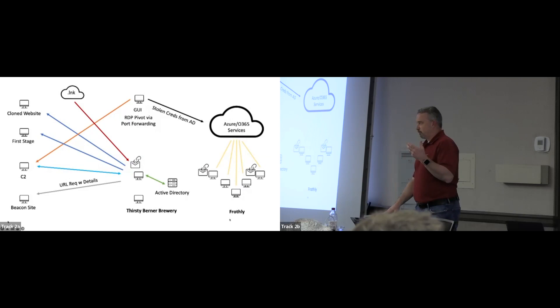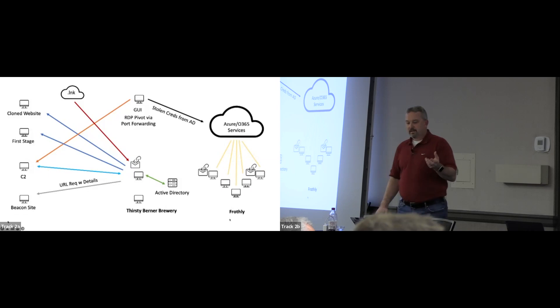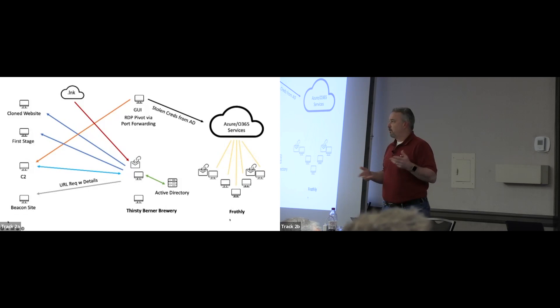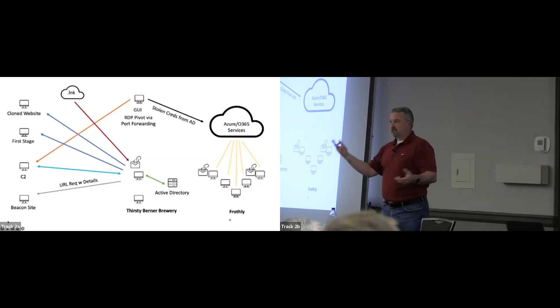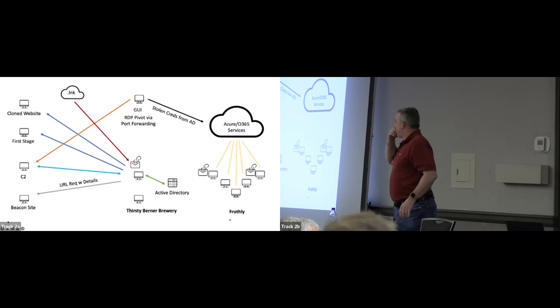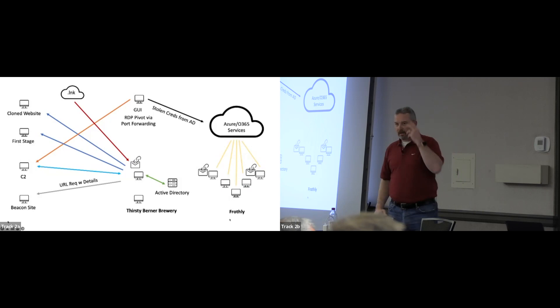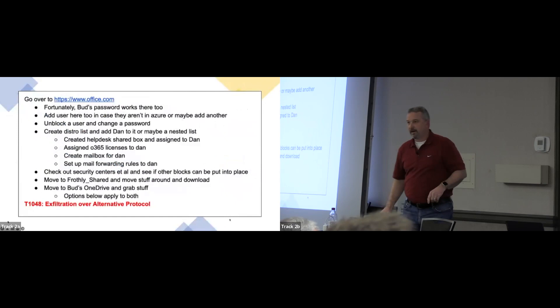The brewing supply company bought the brewery. The brewery was running a local AD syncing to Azure, where the rest of Frothly had moved, because nobody's infrastructure is fully migrated on day one when you buy a new company — there's always a six or nine month transition. With APTs there's a lot of stuff happening and a lot of misdirection, so drawing this thing out and visualizing it makes it easier when we get into writing our narratives.